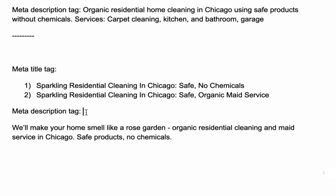Now let's look at the description meta tag. Because I have more space here, I was able to try different things to make it sound nicer. Let's read it together: 'Will make your home smell like a rose garden. Organic residential cleaning and maid service in Chicago. Safe products, no chemicals.' This is human — it's not just keywords. Imagine you care about how your home looks and smells; this is pleasant to see. That was the exercise: make it read nicer while keeping keywords. Now you have keywords and it reads in an attractive way to people.